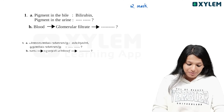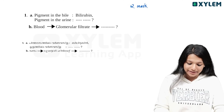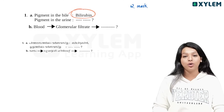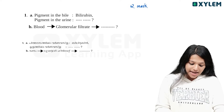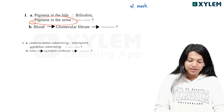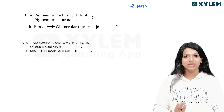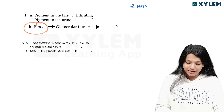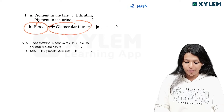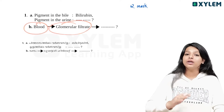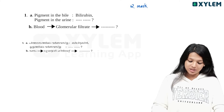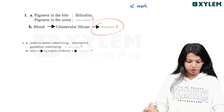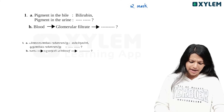What do you think? The pigment in the bile is bilirubin. I am asked about the pigment in the urine. Blood converts to glomerular filtrate.